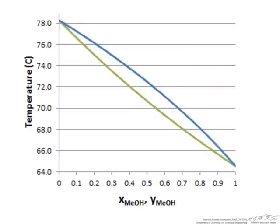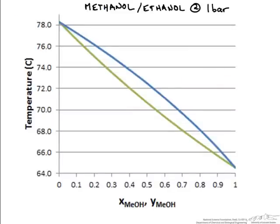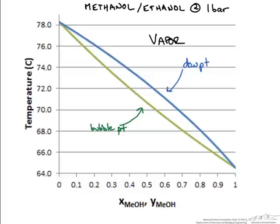Here is a Txy diagram for methanol and ethanol at one bar pressure. On the y-axis we have temperature and on the x-axis we have the mole fraction of methanol — x for the liquid mole fraction and y for the vapor mole fraction. The bottom line represents the bubble point temperatures and the top line represents the dew point temperatures. Everything above the dew point line is in the vapor phase and everything below the bubble point line is in the liquid phase.